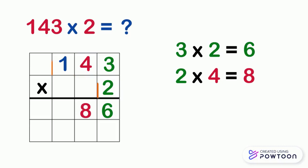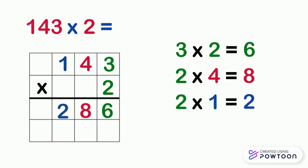Finally, we will move to the 100's place. We will multiply 2 by the 100's digit, which is 1. 2 times 1 equals 2. Then we will write 2 in the answer box in the 100's place. So 143 times 2 equals 286, and this is the final answer. Our multiplication problem is finished.